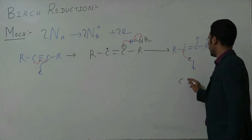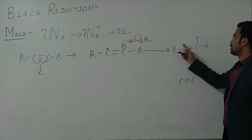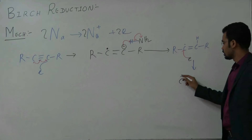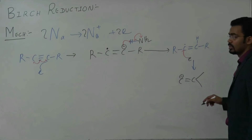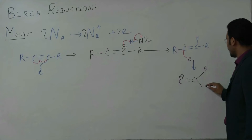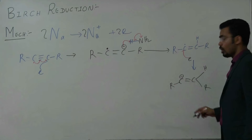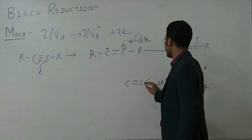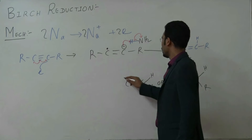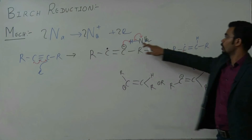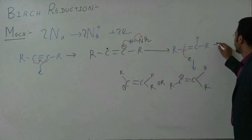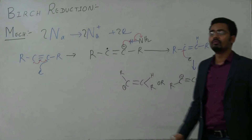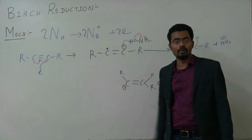That intermediate will be C=C with a negative charge (carbanion). When it gains the electron it becomes negatively charged. Now the geometry will decide: there are two types — one will be the trans arrangement (H and R on opposite sides) and the other will be cis. When the carbanion takes H⁺ from ammonia, NH2⁻ forms along with Na⁺, so sodium amide forms — two moles of sodium amide.